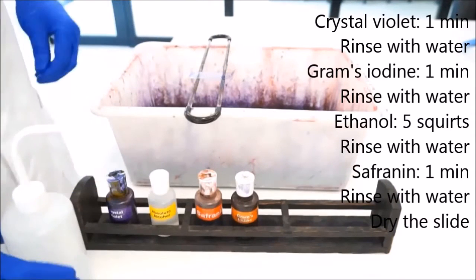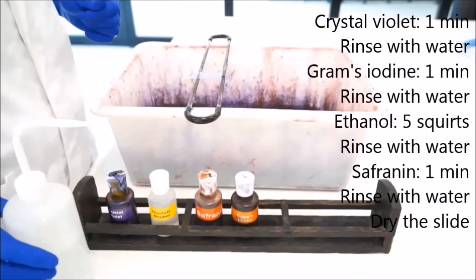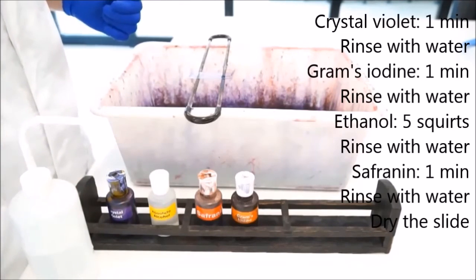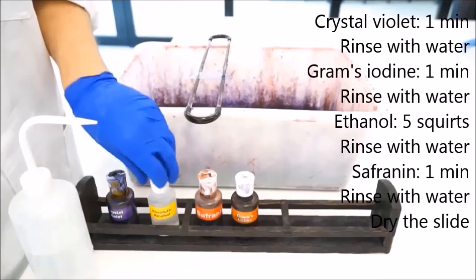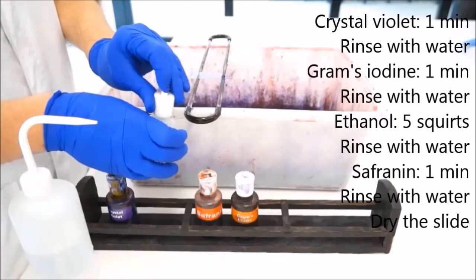The next stain is the Gram's Iodine. Let's just pretend that I've done that in the same way. I want to rush through to the very important differential part of the differential stain, which is using the Absolute Alcohol. Again, pop that lid right up.